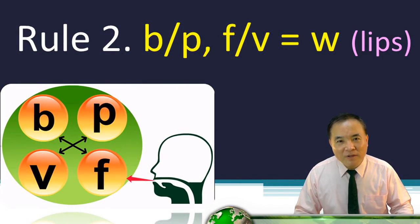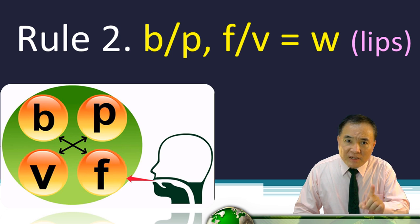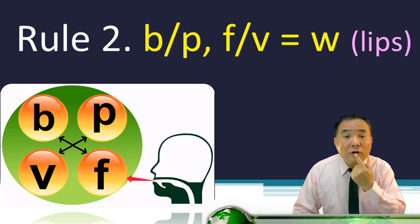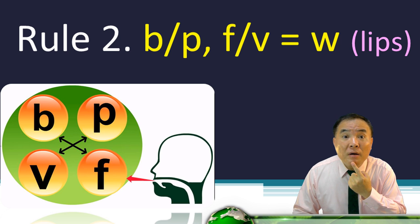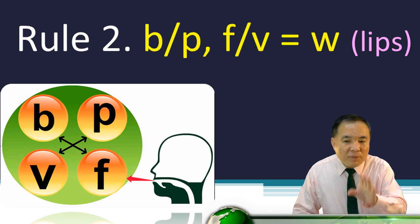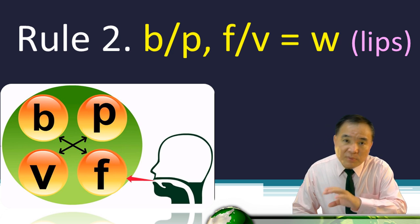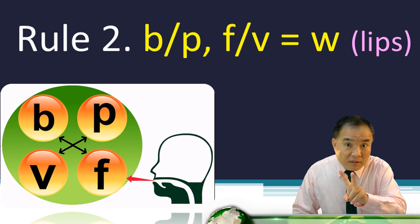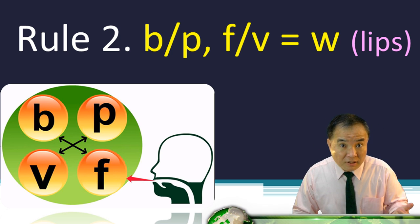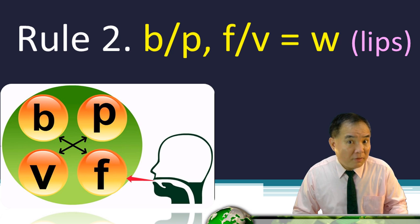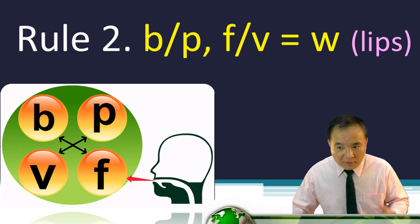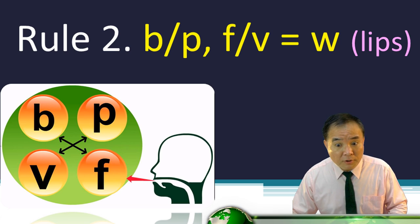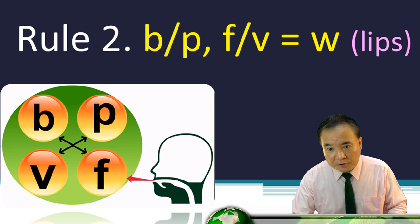Rule number two: BPFV, the so-called lip sound. In ancient times, V and W were the same thing, so we write them together here. Lip sounds can also be interchangeable to make similar words.